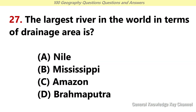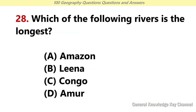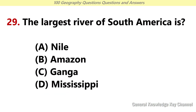The largest river in the world in terms of drainage area is? Answer C: Amazon. Which of the following rivers is the longest? Answer A: Amazon. The largest river of South America is? Answer B: Amazon.